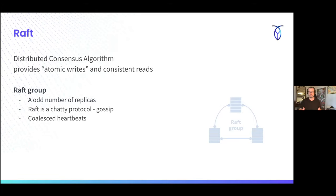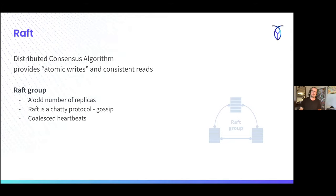The concept of atomicity means: do those transactions actually commit as a whole? Raft is implemented as an odd-number group of replicas of data. When I write a record, I'm going to have three copies stored in three different spots. This is configurable within the Raft protocol — it's got to be odd: three, five, seven, nine, eleven. There are different reasons why you'd want multiple different sizes of replica sets. Raft is a very chatty protocol — there's constant communication between these Raft groups, and it's always keeping time via coalesced heartbeats.